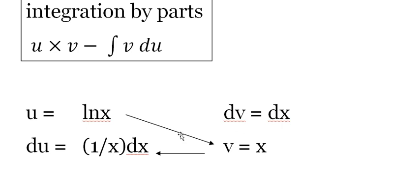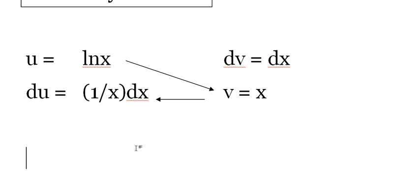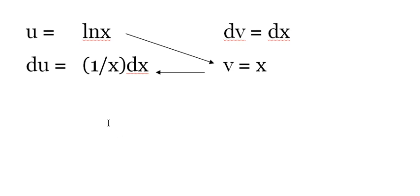And what this means is it reminds you of what your equation was, which is u times v minus, think about horizontally, v du. So u times v: x natural log of x minus